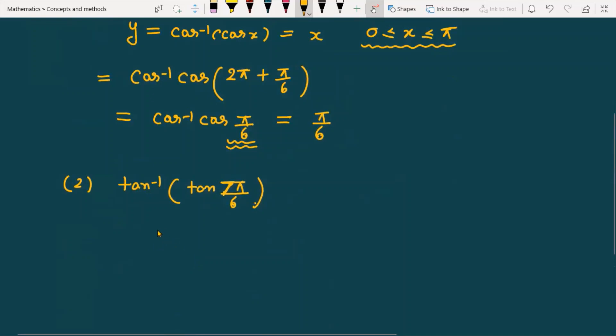Again I will share a property with you: tan inverse tan x, this function is always equal to x, but the restriction for x is x is greater than minus π by 2 but less than π by 2. If x is between minus π by 2 and π by 2, then you can directly replace it with x, otherwise you have to do further manipulation.